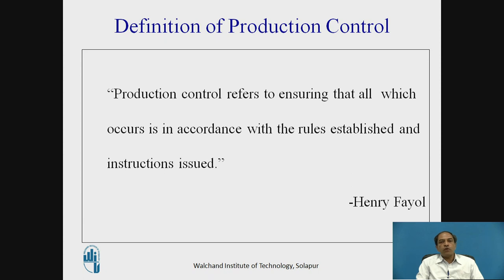Production control refers to ensuring that all that occurs is in accordance with the rules established and instructions given. In simple terms, it is comparing whether the plan is moving accordingly — comparing actuals versus plan. We have to compare what is actually happening against what was planned, and then apply proper corrective actions. This is in short called production control.